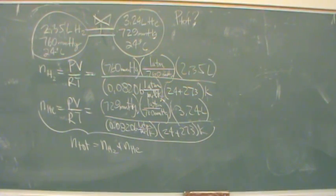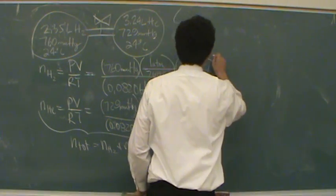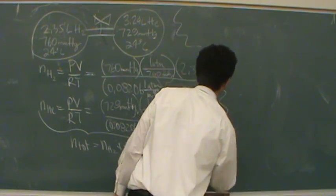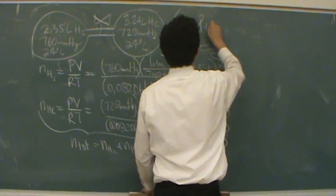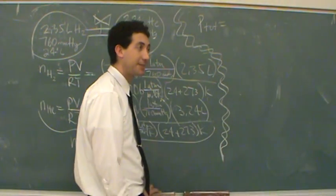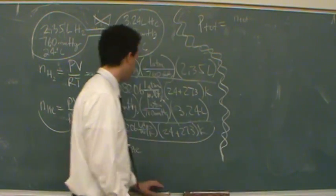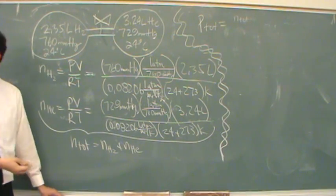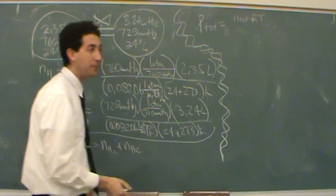Now, remember, they wanted what's the total pressure upon opening the valve and allowing them to mix. So, P total, we'll also get from the ideal gas law because we know everything. We'll know N total, we've actually already calculated it, R, we know that, we know T because they're both at the same temperature.